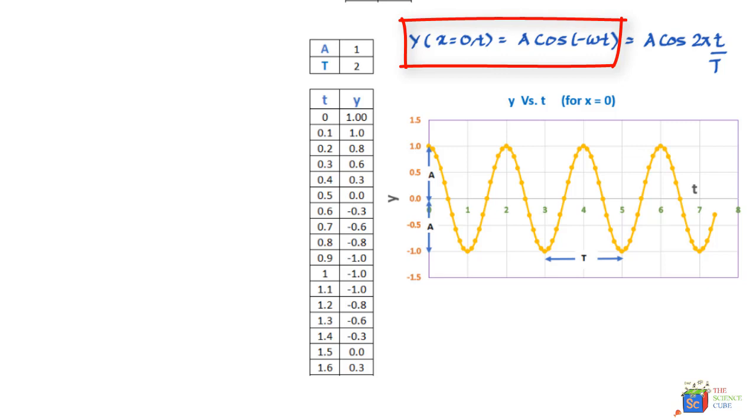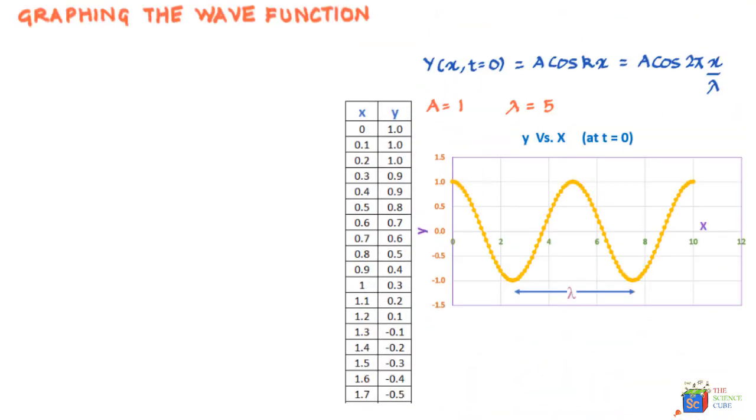So again I have pre-calculated the y values for various time values and this is the table I got. So you can see that the particle at x is equal to 0 has various y positions at various times t, and the corresponding graph looks like this. So all I have done is taken the y values at various times t by substituting t values in this equation and calculating the y values and it's plotted on this graph over here.